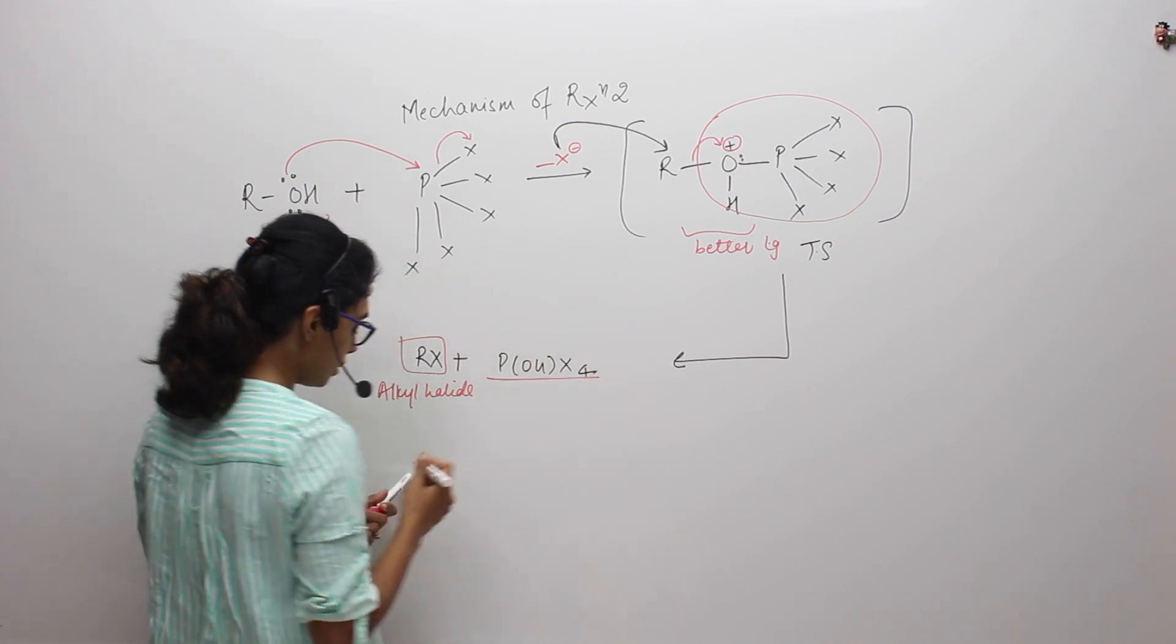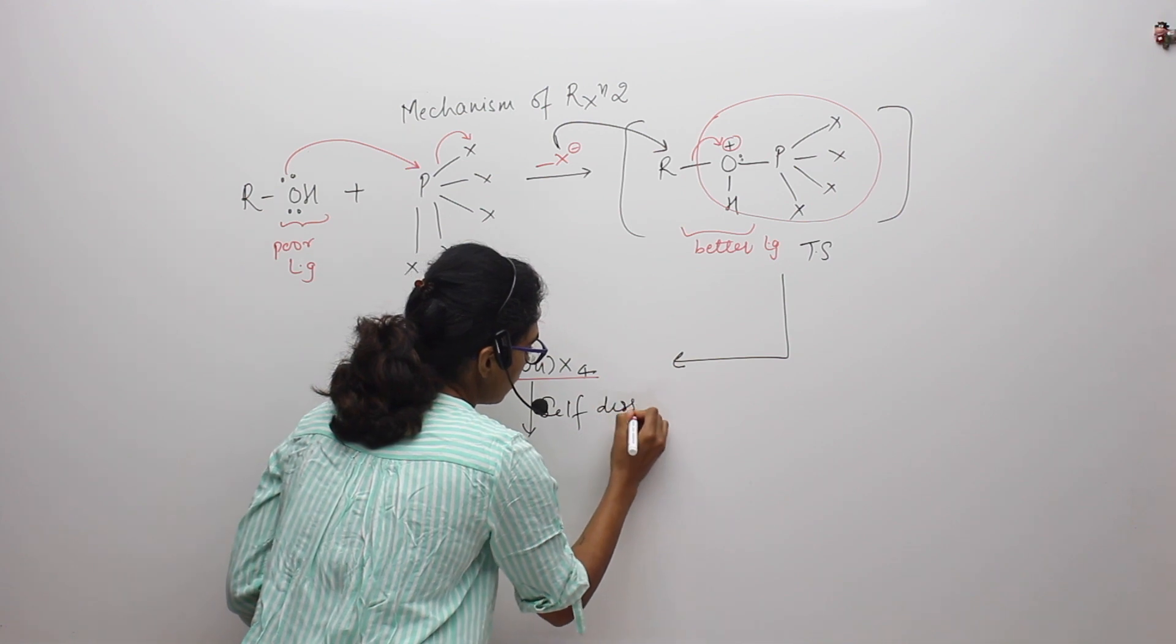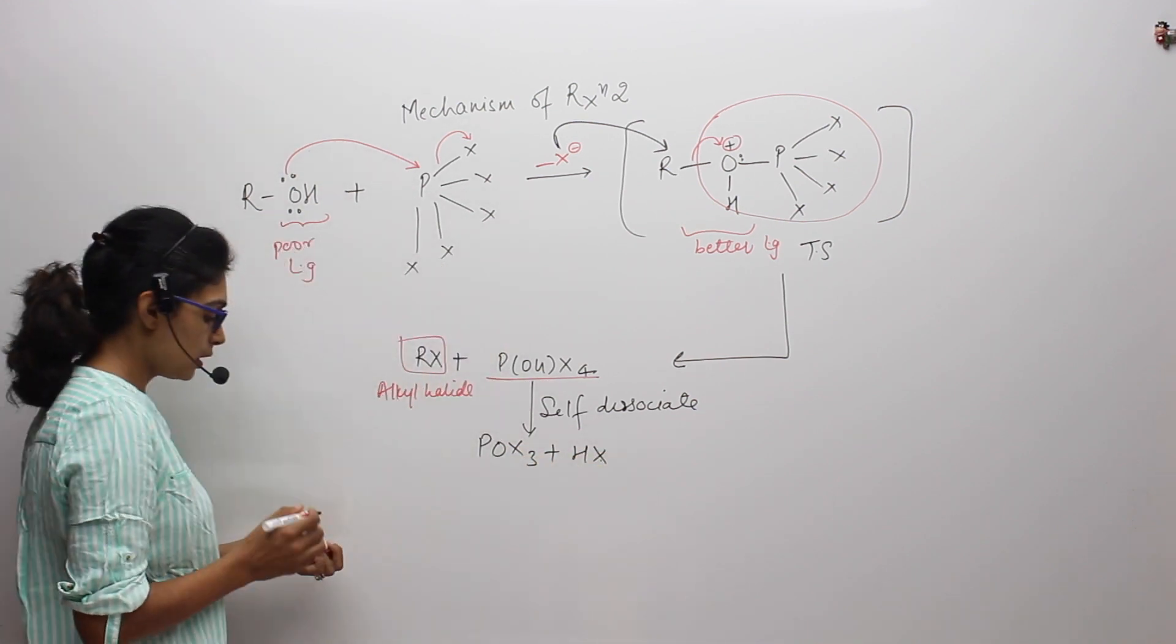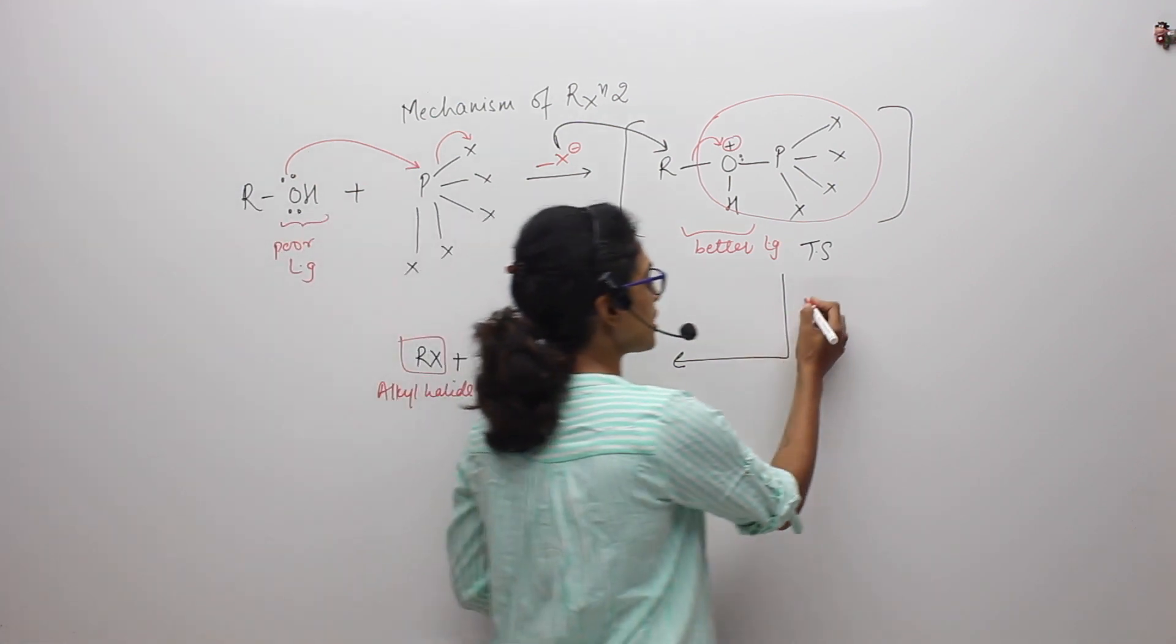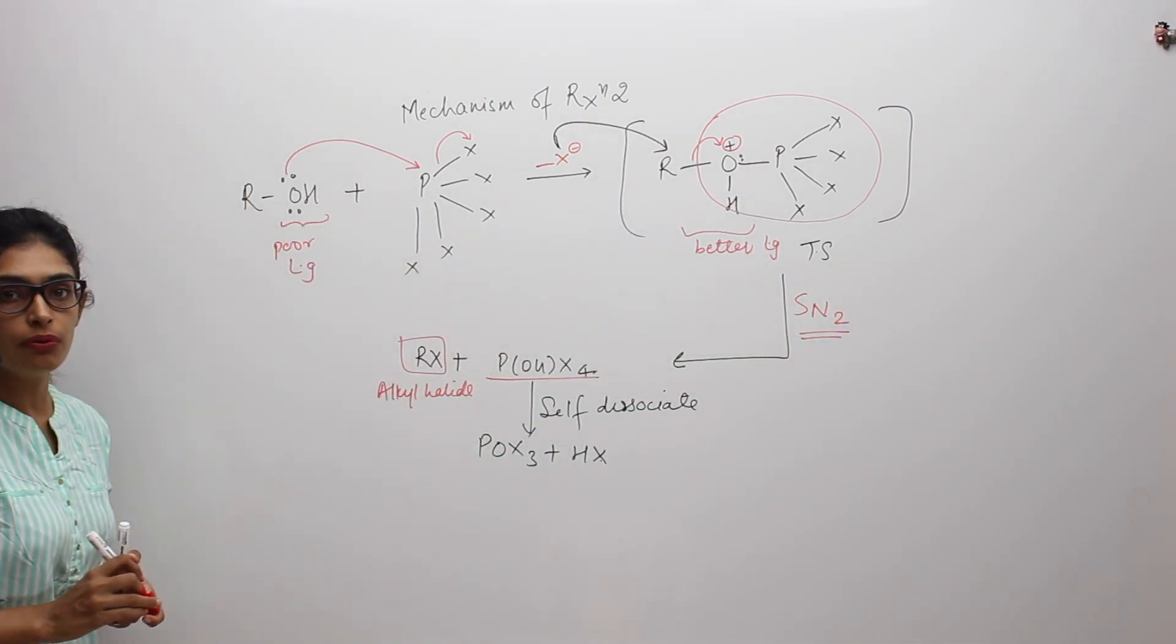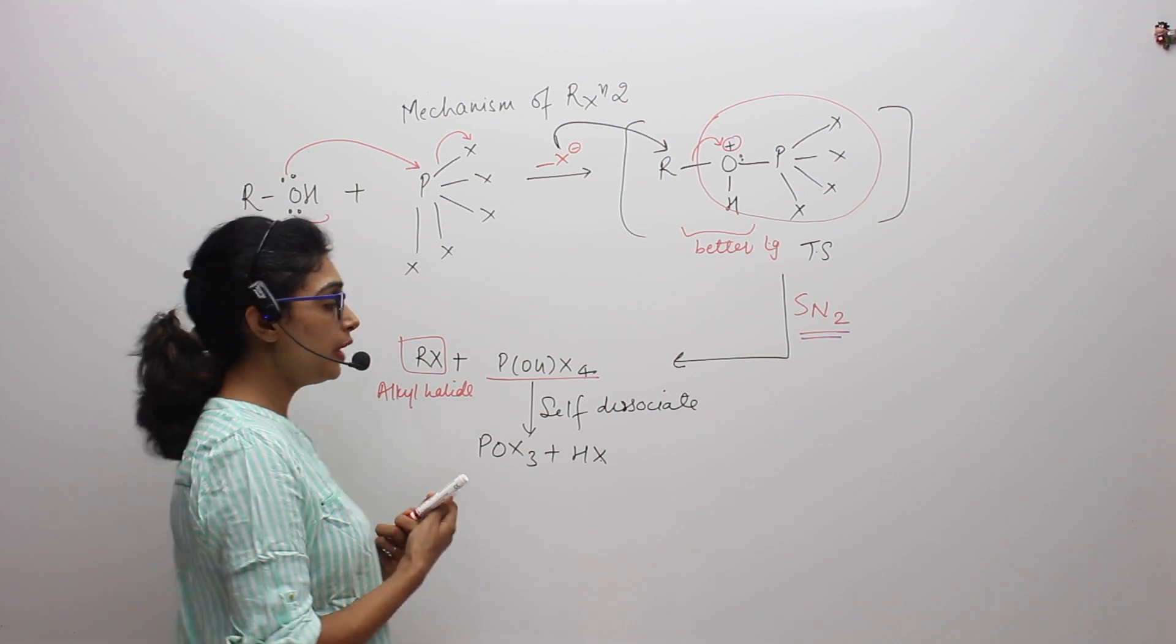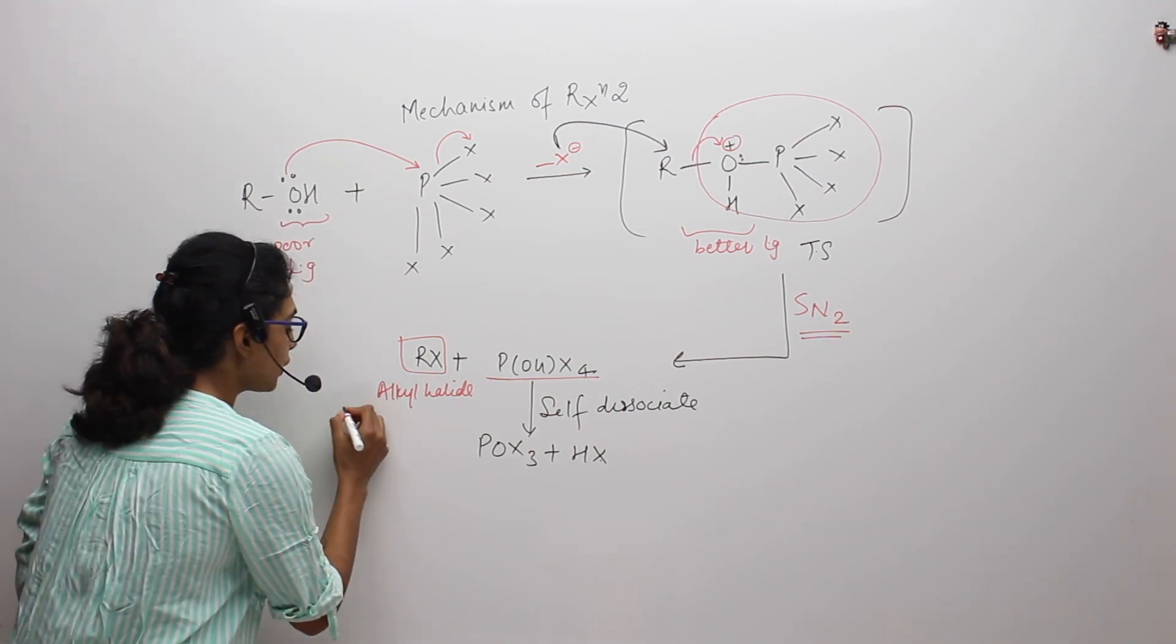And this POHX4 will self-dissociate to form POHX3 plus HX. This reaction mechanism from transition state till the final product will go through SN2 mechanism. Your X minus will attack on carbon which is attached to oxygen through SN2 mechanism. Hence, if this R is or if the carbon where X is attached is a chiral carbon, there will be inversion of configuration.